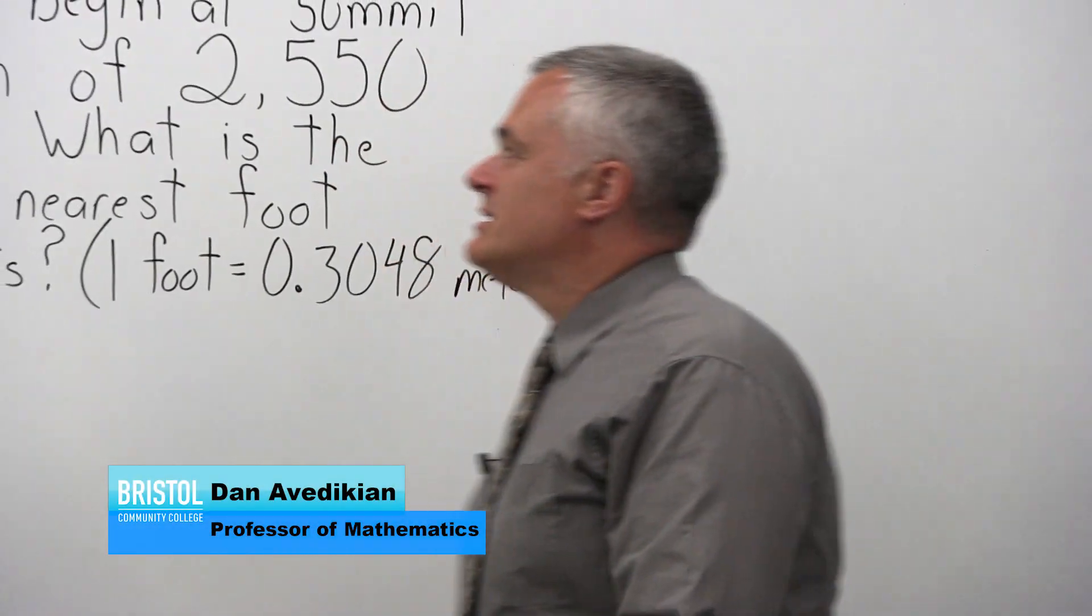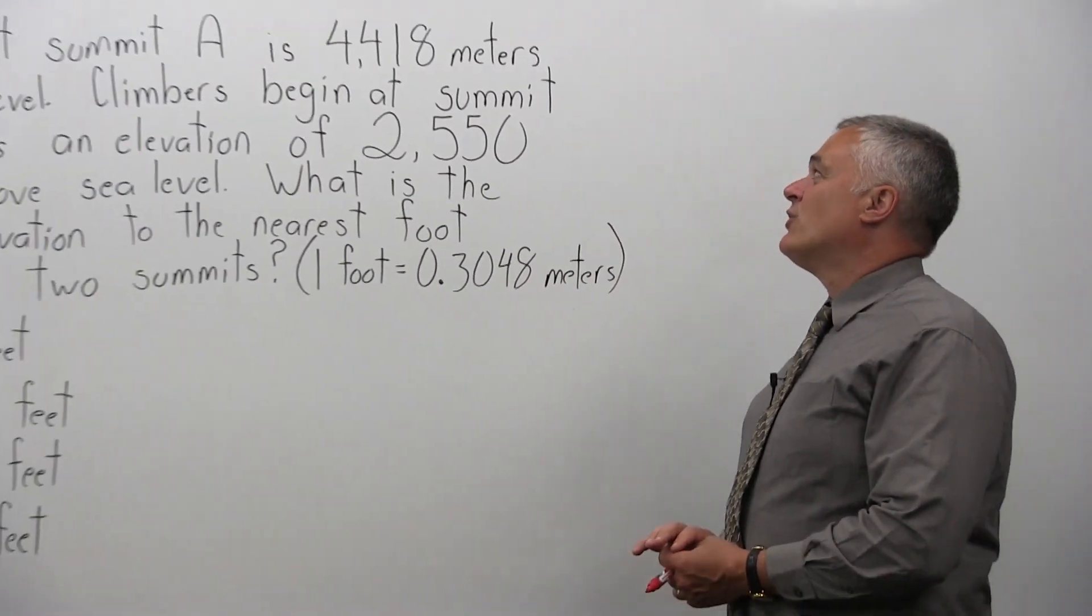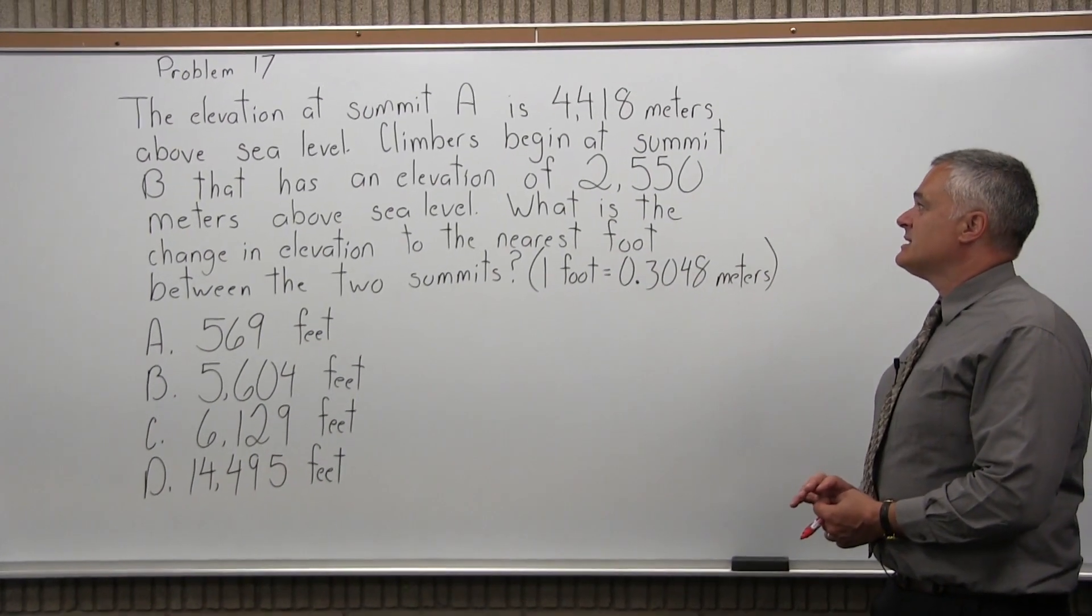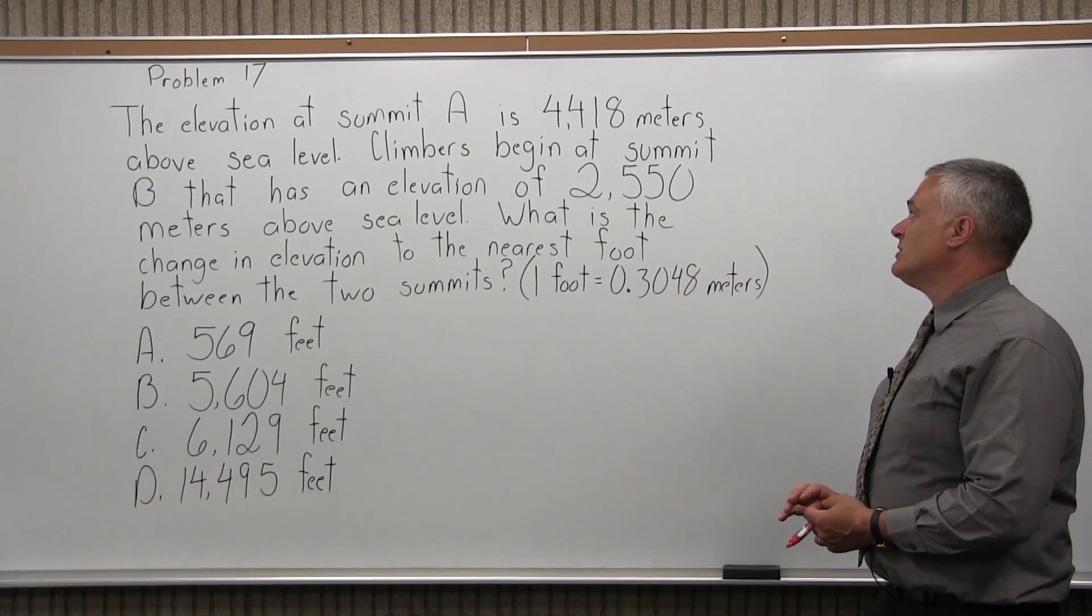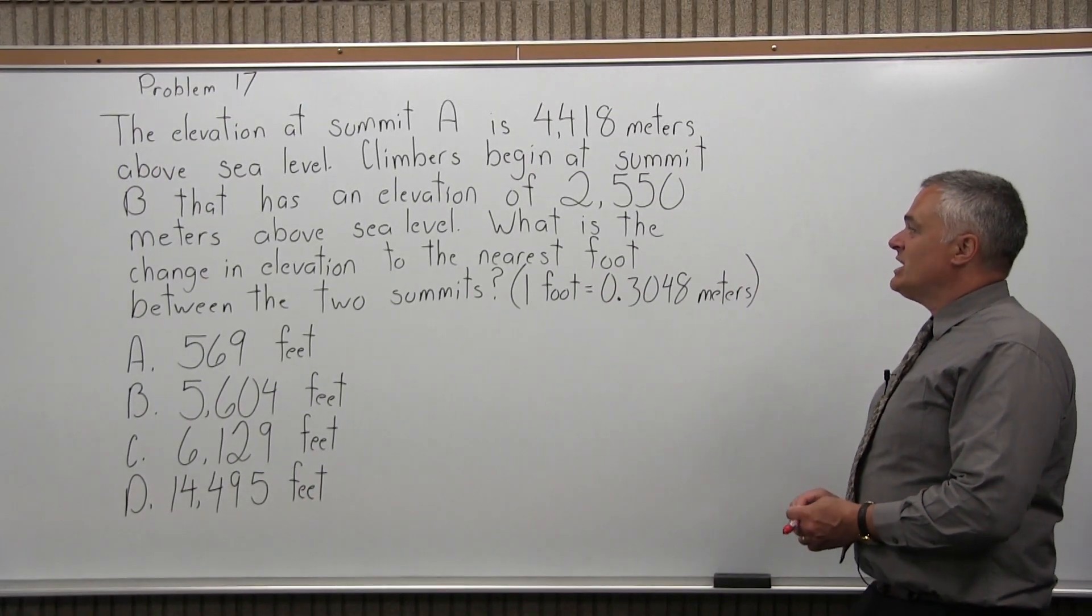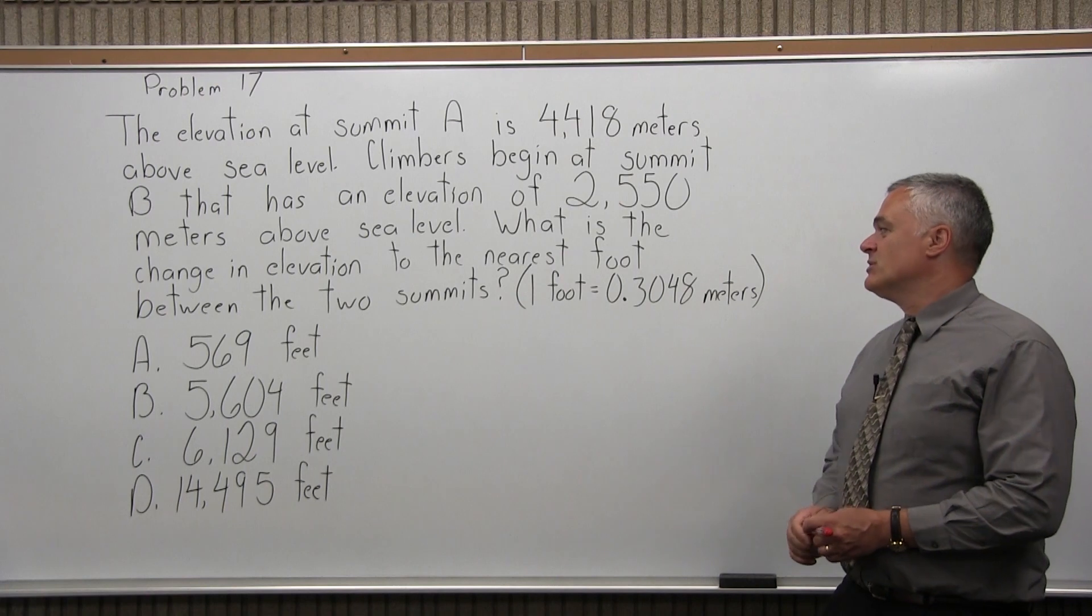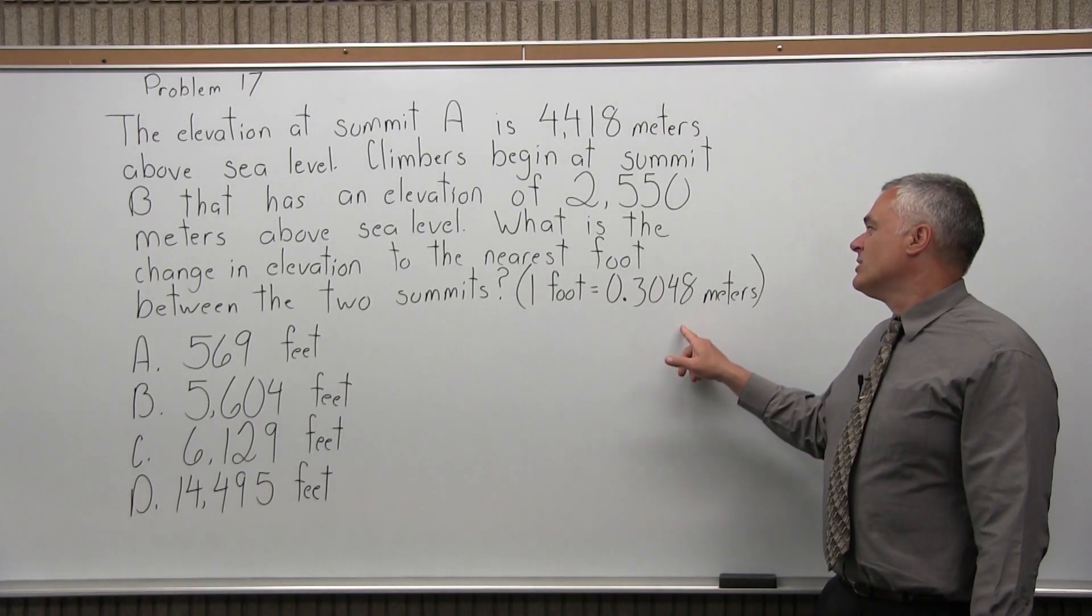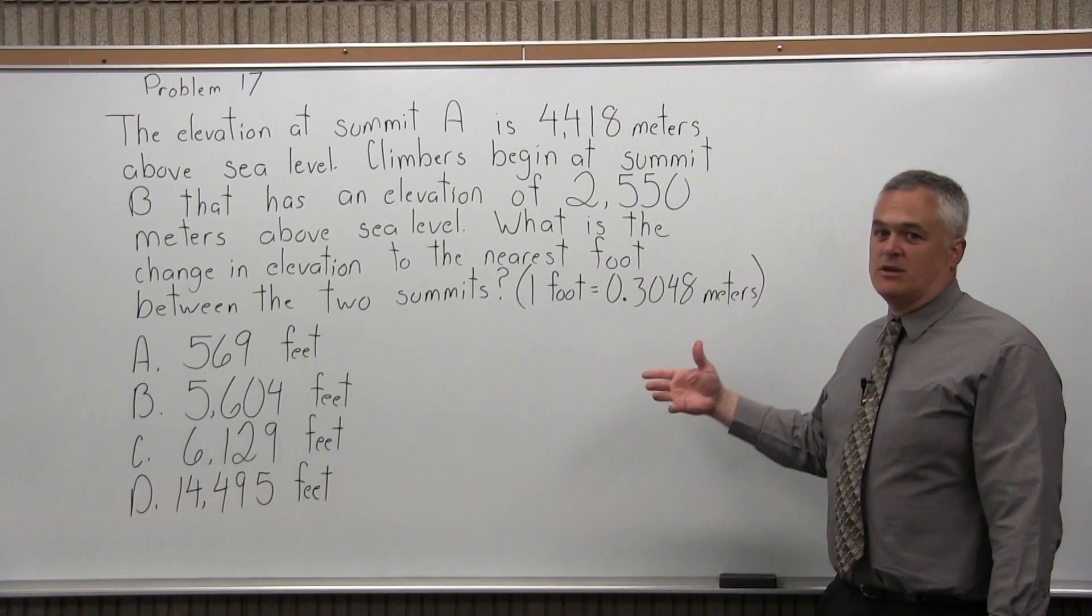This is Problem 17. It says the elevation at summit A is 4,418 meters above sea level. Climbers begin at summit B that has an elevation of 2,550 meters above sea level. What is the change in elevation to the nearest foot between the two summits? And it gives you a little hint that one foot is equal to 0.3048 meters.